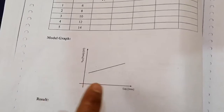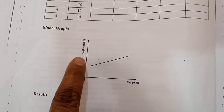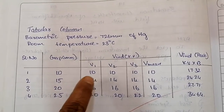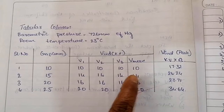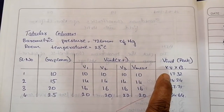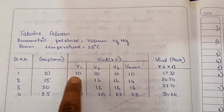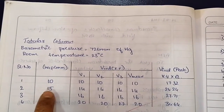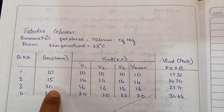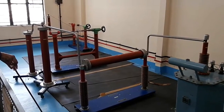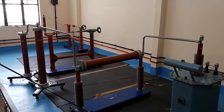You can see the readings and the model graph — plot gap versus V peak, which will be a straight line. In the tabular column at 10mm, I performed three flashovers and got 10kV each time, so the mean is 10kV. To find the peak value for AC: V_peak = V_rms × √3. So, mean value 10kV × √3 = 17.32kV. Similarly, increase the gap distance to 15mm, 20mm, 25mm, and so on, and find V1, V2, V3, and V_max for each.